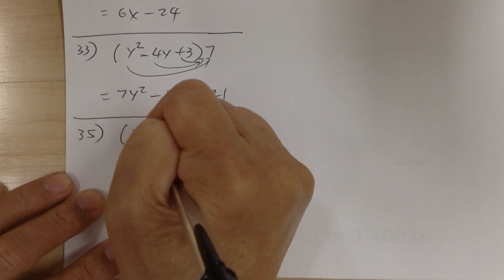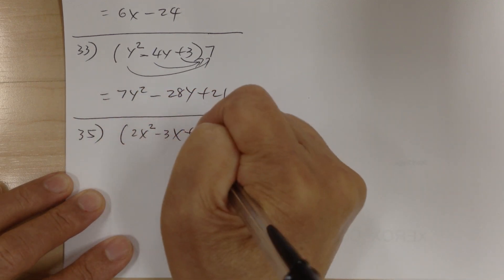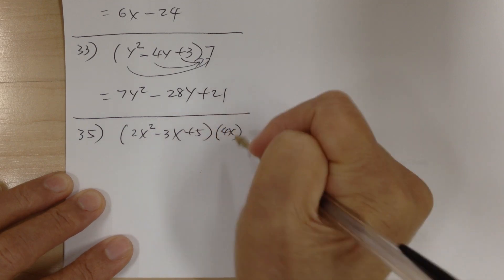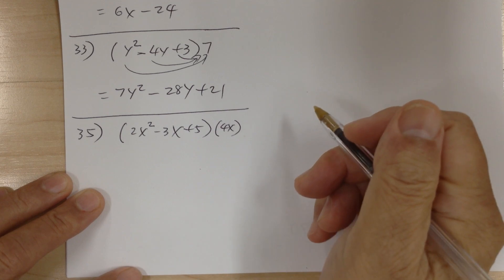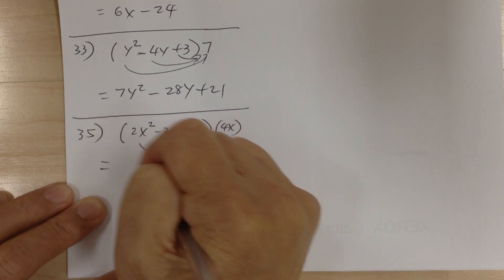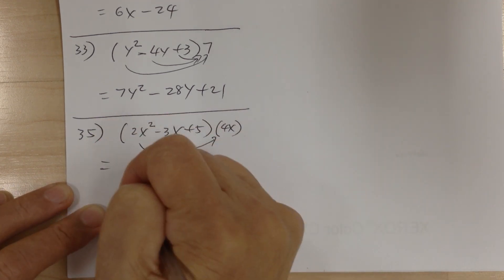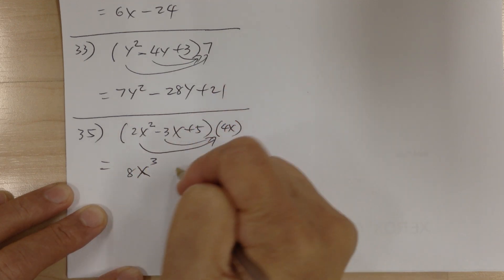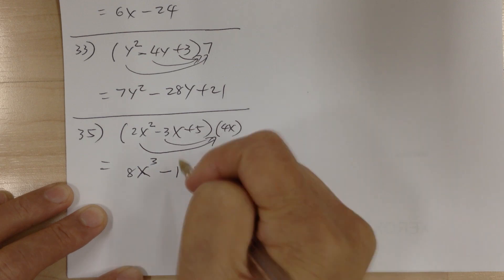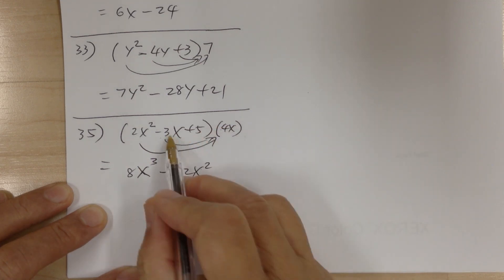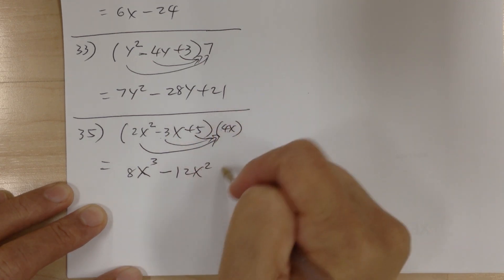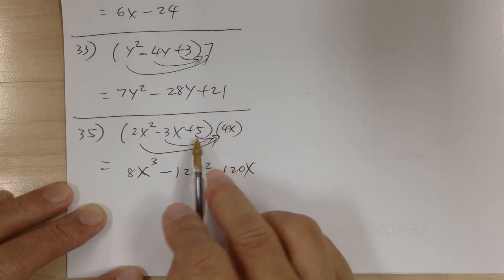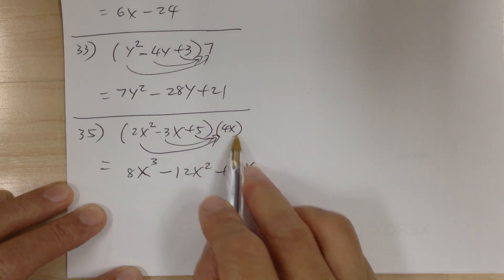Number 35. You have (2x squared minus 3x plus 5) times 4x. Distribute: this gives 8x to the 3. The next term gives minus 12x squared. When you multiply, just do the sign, number, and alphabet. Next: sign is positive, 5 times 4 is 20, alphabet is x, so plus 20x.